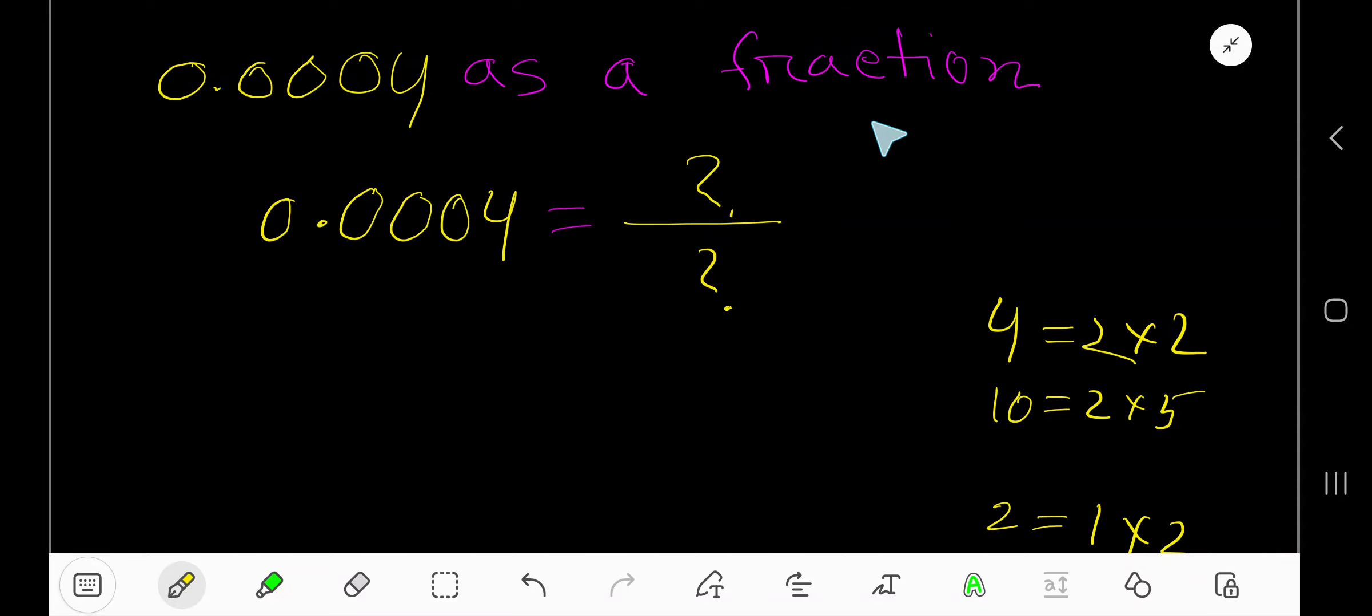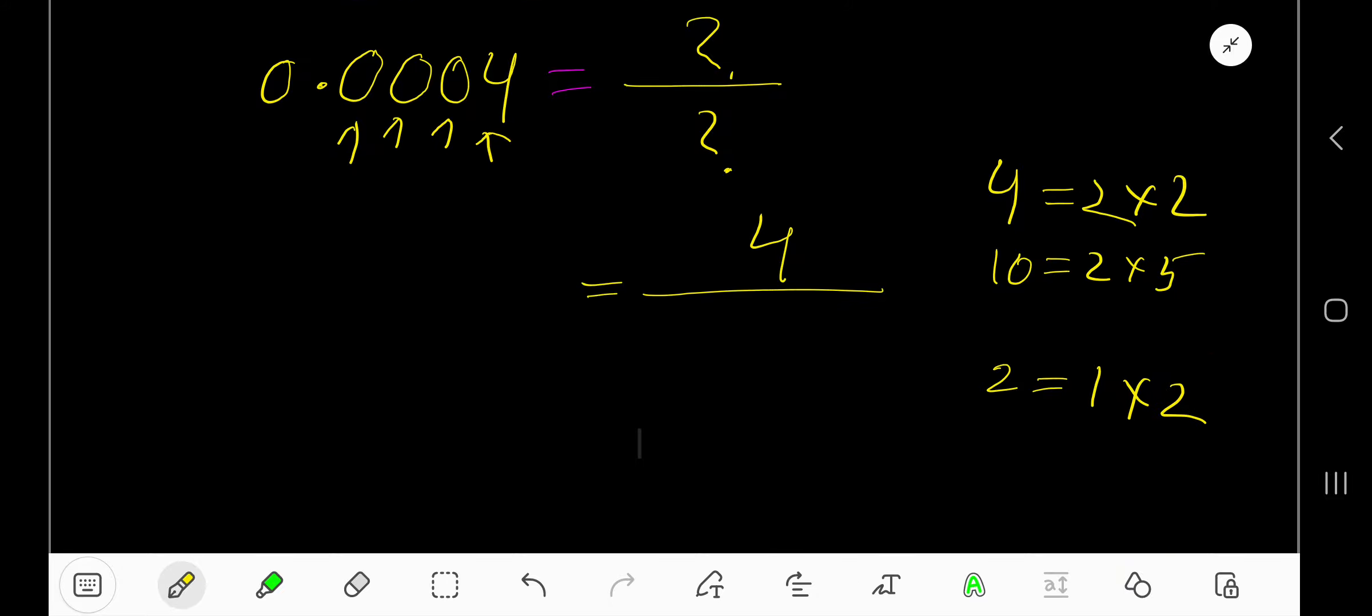To convert 0.0004 as a fraction, we need a numerator and denominator. For the numerator, write the number ignoring decimals, which gives us 4. For the denominator, for every digit after the decimal, you have to consider 10 as a multiplication. Since this number has 4 digits after the decimal, you write 4 tens as a multiplication.